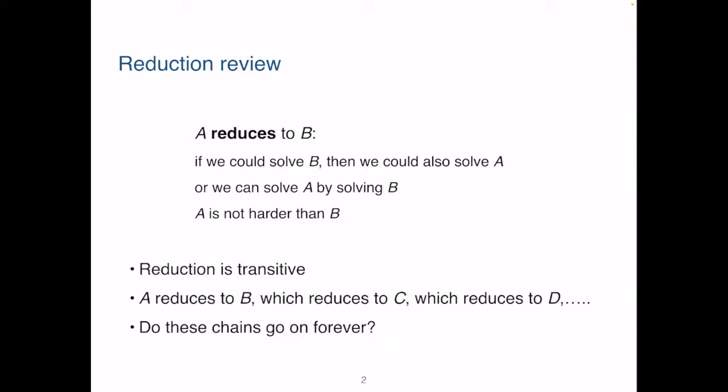Reduction is transitive. If A reduces to B, B reduces to C, then we also have A reduces to C. We just need two steps of polynomial time transformation. We can write chains of reduction like this.